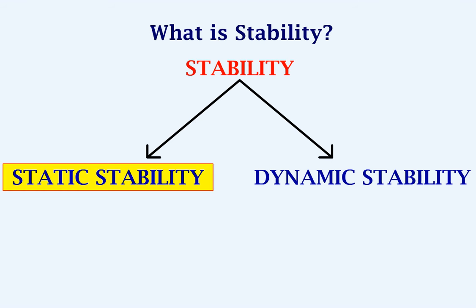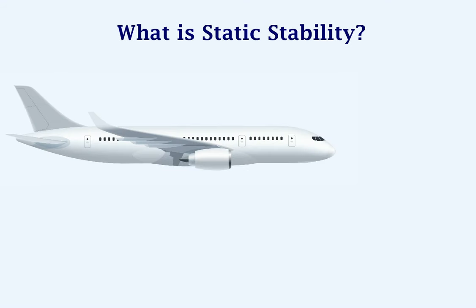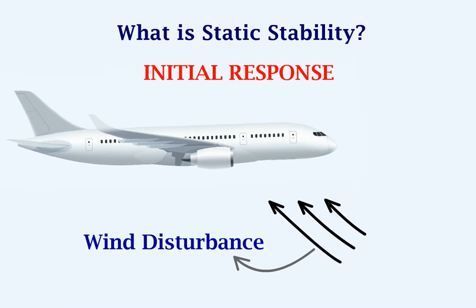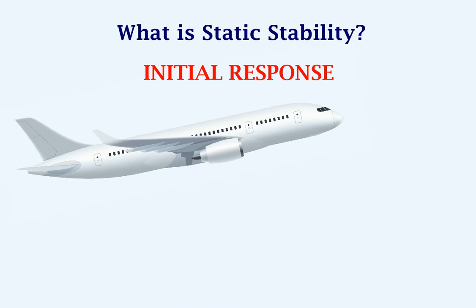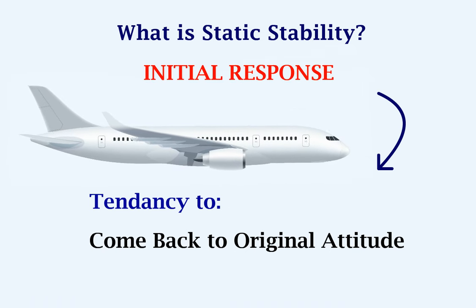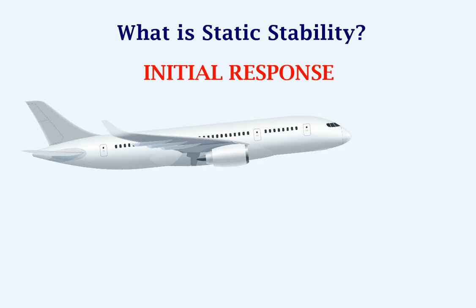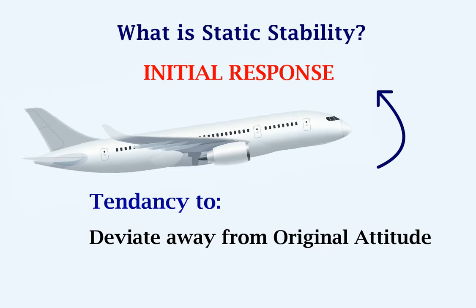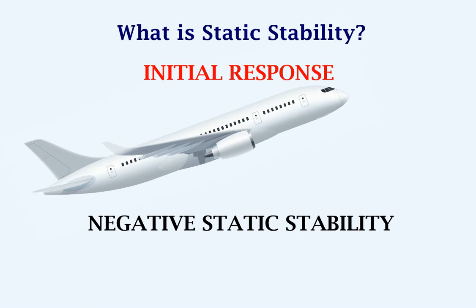We will look at static stability in this video. Static stability refers to the initial response of an aircraft after it is subject to a disturbance. After the disturbance, if the aircraft has a tendency to come back to its original attitude, it is said to have positive static stability. If the aircraft has a tendency to deviate away from its original attitude, it is said to have negative static stability.